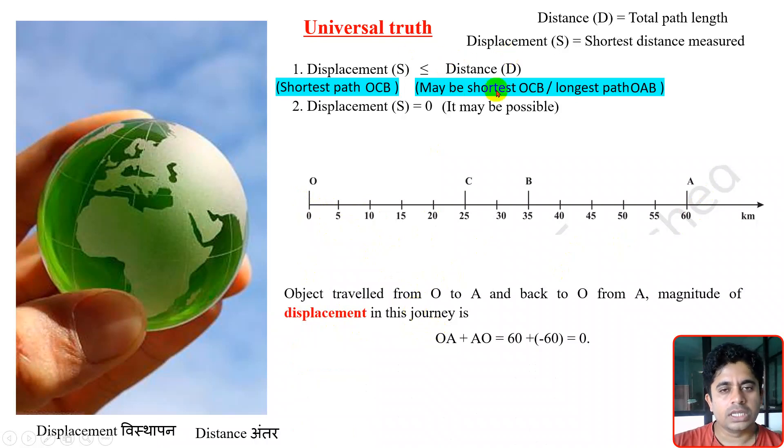Again, as we know, distance is a scalar quantity - we are not bothered about directions. But for displacement we have to consider the directions; we have to follow some sign convention. So what sign convention are we following?